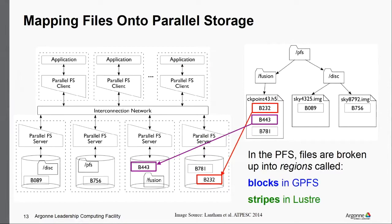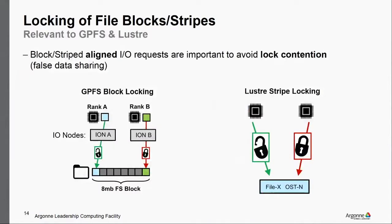How are files mapped onto the parallel file system? A file like checkpoint.h5 is treated in POSIX convention as a contiguous stream of bytes, but the parallel file system will break that file into extents — in GPFS they're called blocks, in Lustre they're called stripes — and those blocks or stripes can be distributed to different storage devices. Since the system is broken up into different blocks or stripes, different compute resources may be fighting over those blocks.